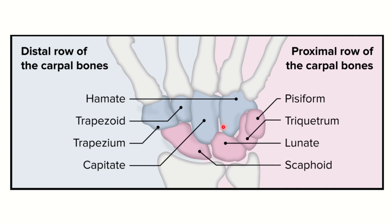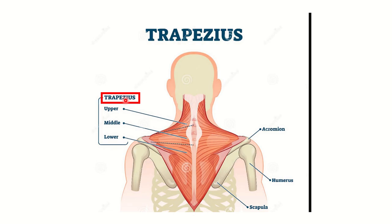So these eight bones are the carpal bones: scaphoid, lunate, triquetral, pisiform, trapezium, trapezoid, capitate, and hamate. Any option outside these eight bones will be the false answer — meaning it is not a carpal bone.